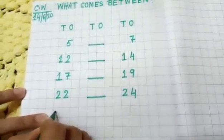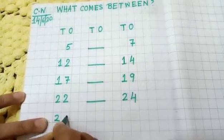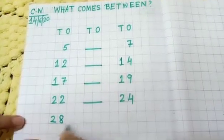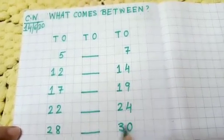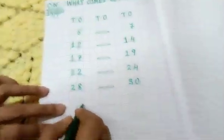Now here you write. Twenty, eight. Dash, three, zero, thirty. Ok.